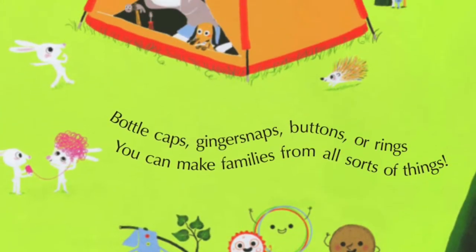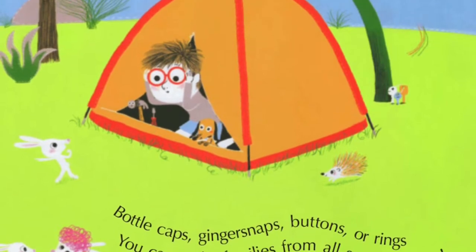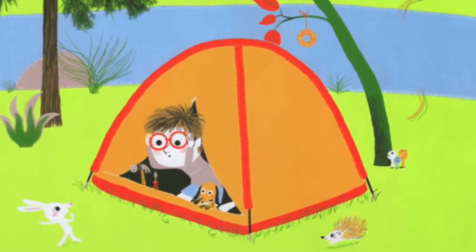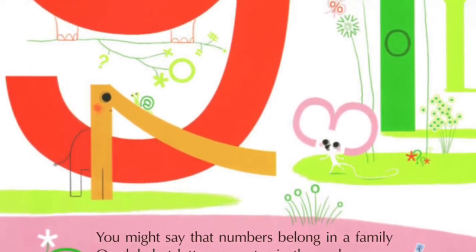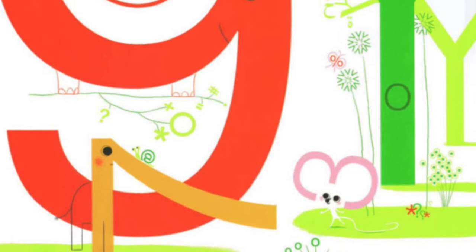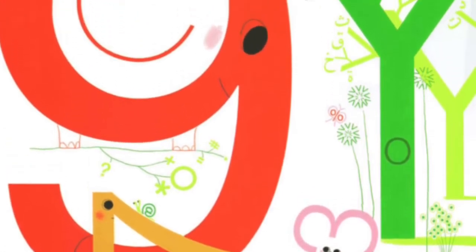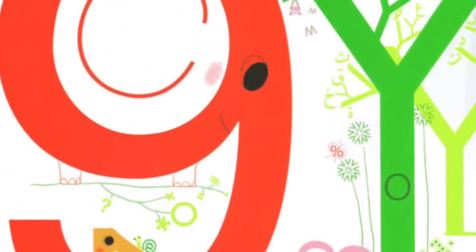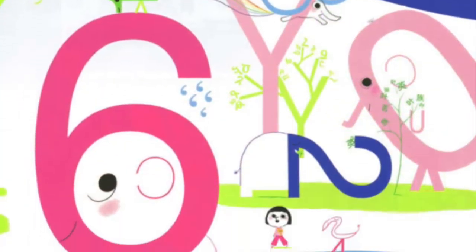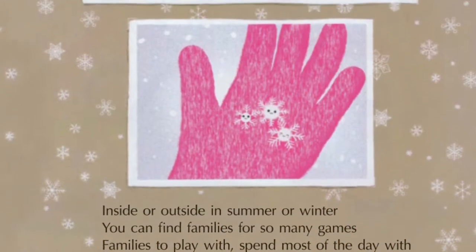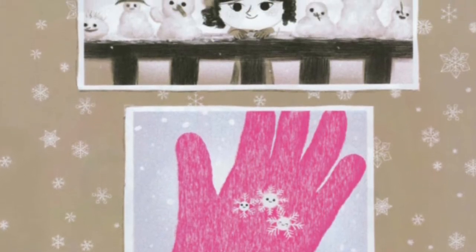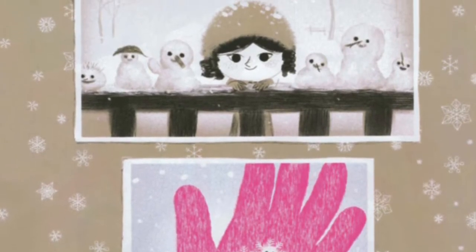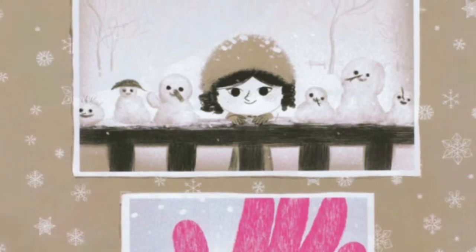Bottle caps, ginger snaps, buttons, or rings — you can make families from all sorts of things. You might say that numbers belong in a family, or alphabet letters or notes in the scale — the colors in rainbows, the words in a language, the keys on a piano or stamps for the mail. Inside or outside, in summer or winter, you can find families for so many games — families to play with, spend most of the day with, telling them stories and giving them names.